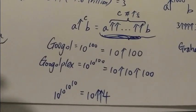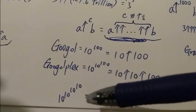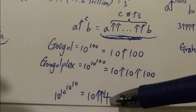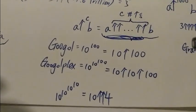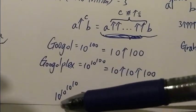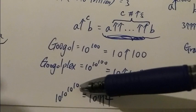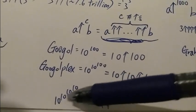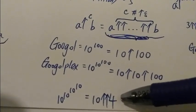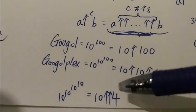And then if you want to write even bigger numbers, let's say 10 to the 10 to the 10 to the 10, this number is bigger than the googolplex, you can write it as 10 double arrow 4. So two arrows, double arrow in this case, kind of means a power tower of this number A, so a power tower of 10. And how many levels? 4. B represents the number of levels.